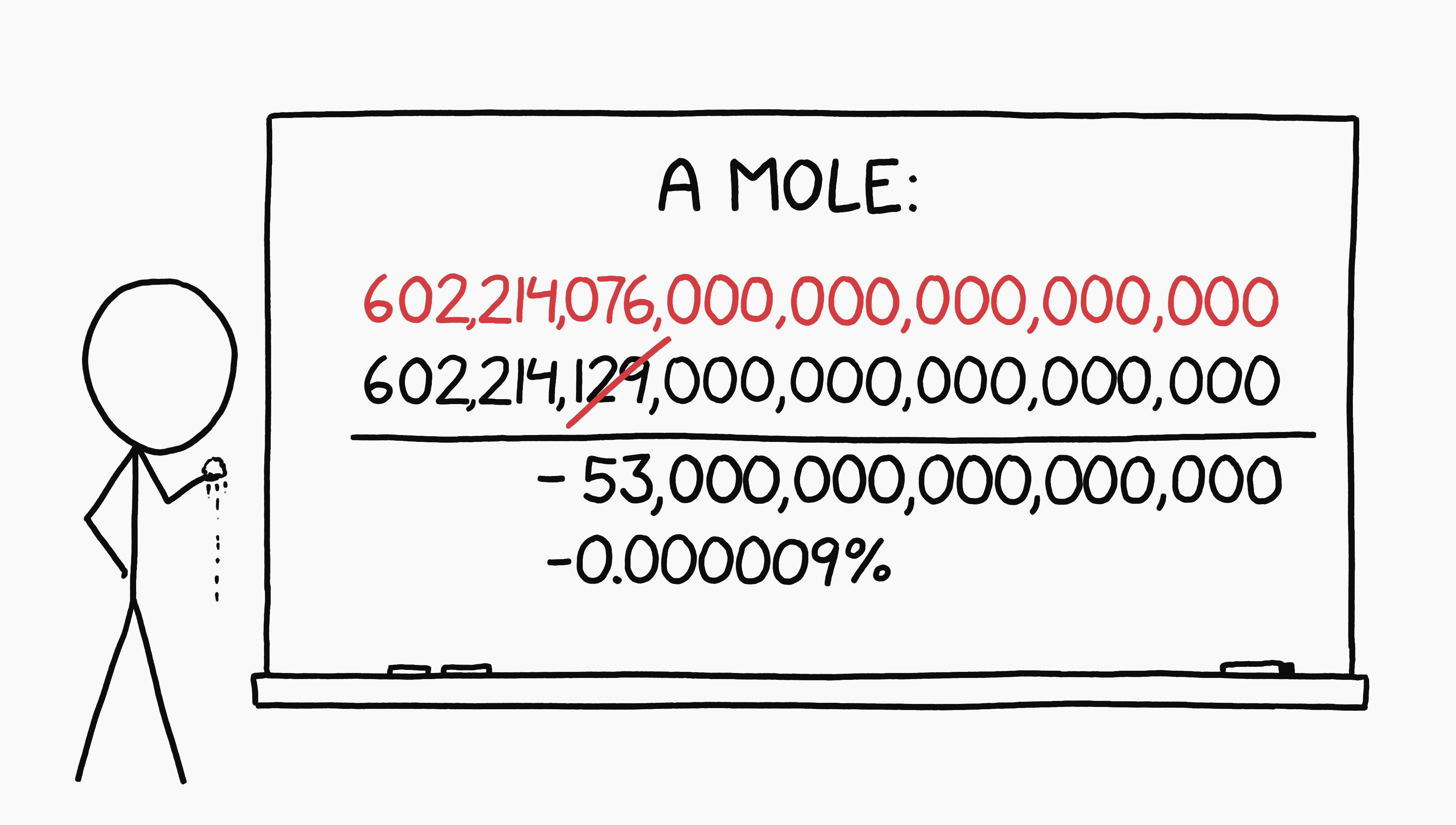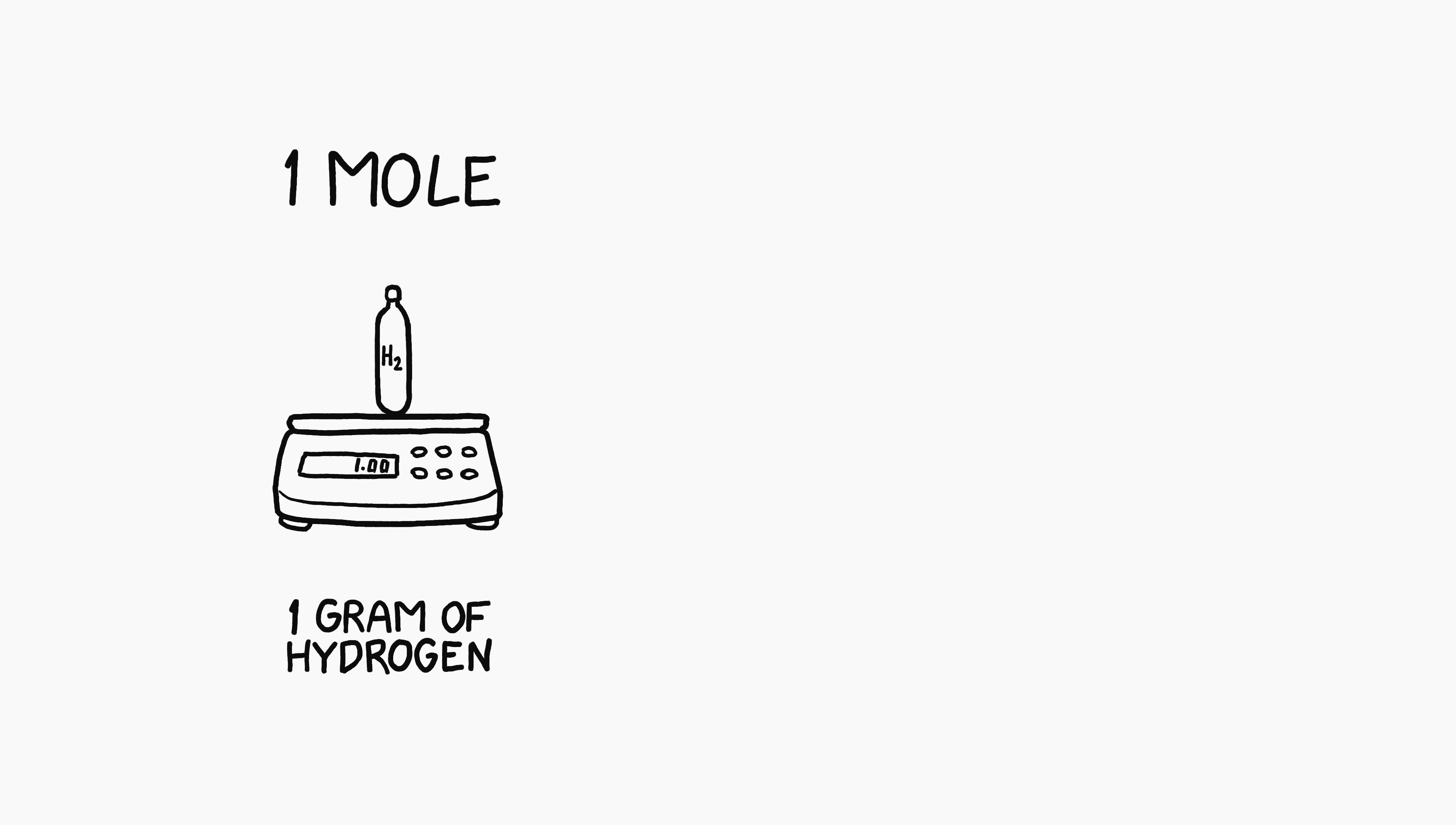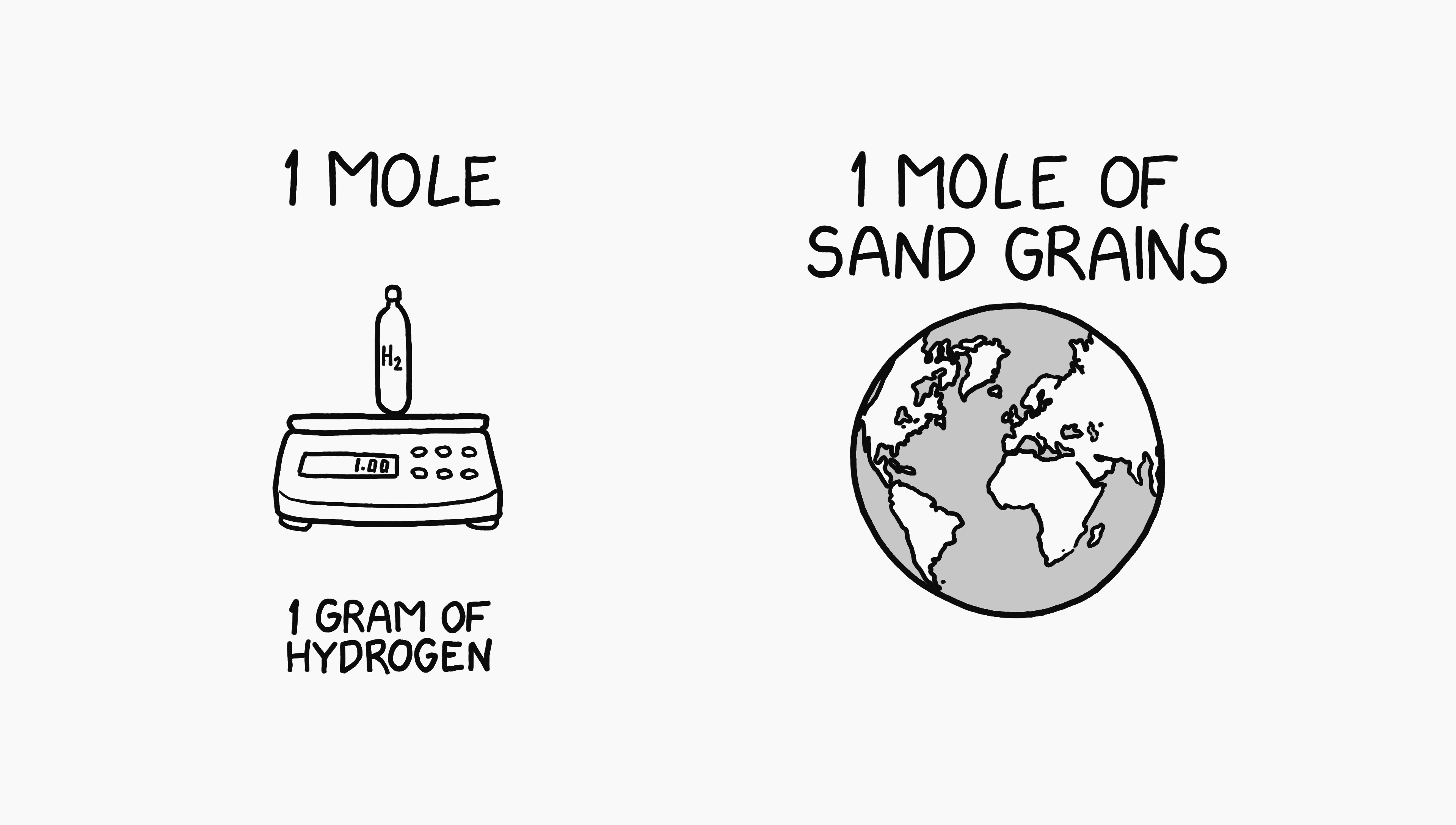Either way, a mole is such a big number because it's used for counting numbers of molecules, which there are a lot of. One mole is, by design, close to the number of atoms in a gram of hydrogen. It's also, totally by chance, a decent ballpark guess for the number of grains of sand on Earth.